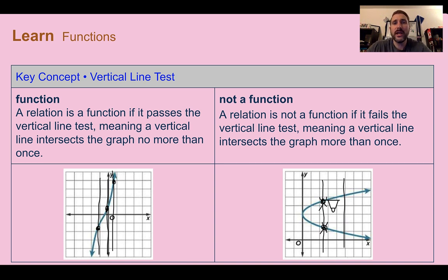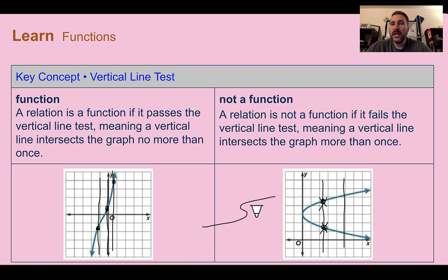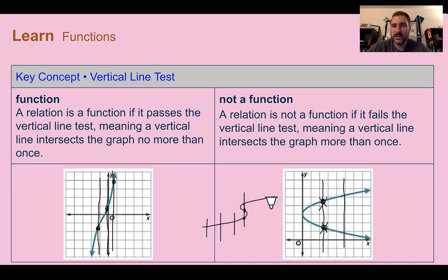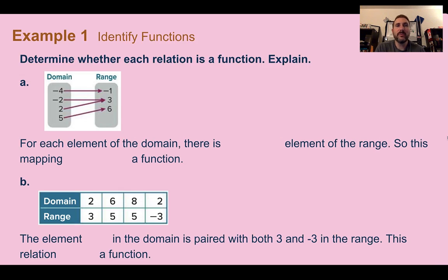Functions only cross a vertical line once; non-functions will cross more than once. If you ever find even one place where it crosses more than once, it is not a function. For example, if you have a line where most places only cross once but there is one spot where it crosses more than once, that would not be a function.